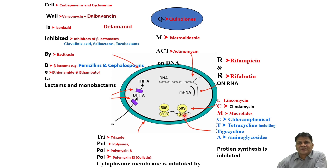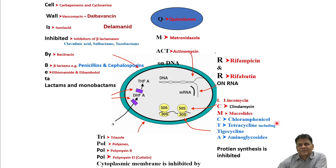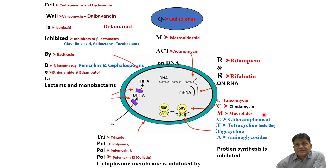Protein synthesis is inhibited at two levels. At the 30S ribosomal subunit: A is for aminoglycosides, which include gentamicin, amikacin, and streptomycin; T is for tetracyclines, including tigecycline recently added to our armamentarium; C is for chloramphenicol, earlier used for typhoid fever but now rarely used due to bone marrow suppression. Macrolides include erythromycin and azithromycin, widely used during the COVID-19 epidemic; C is clindamycin and L is lincomycin.